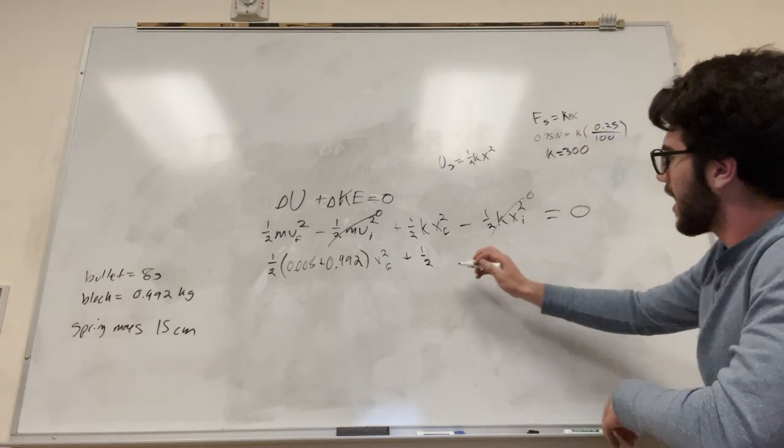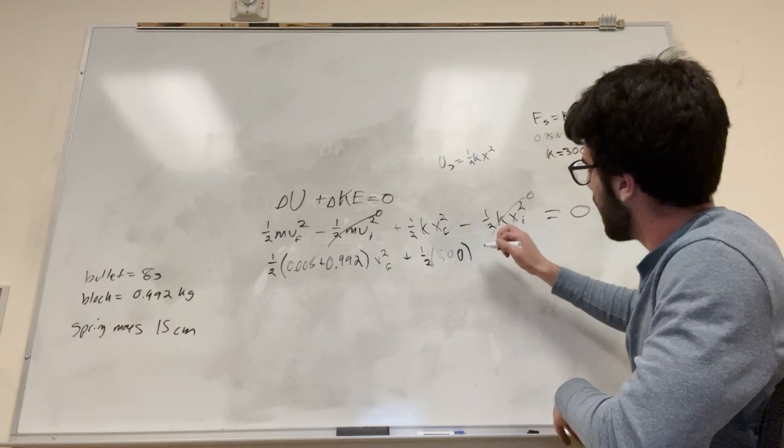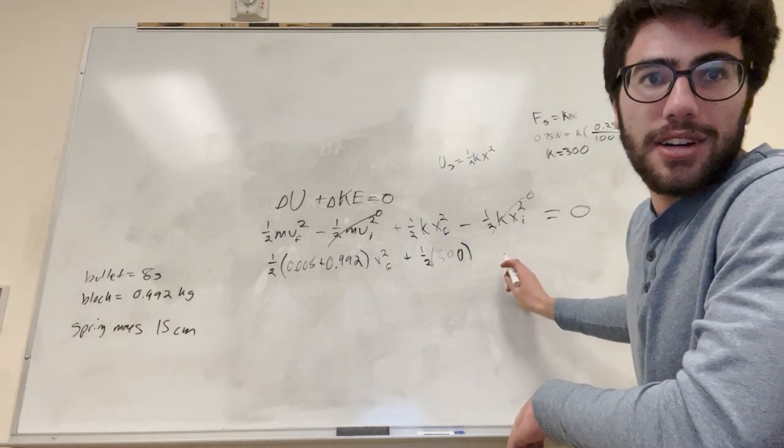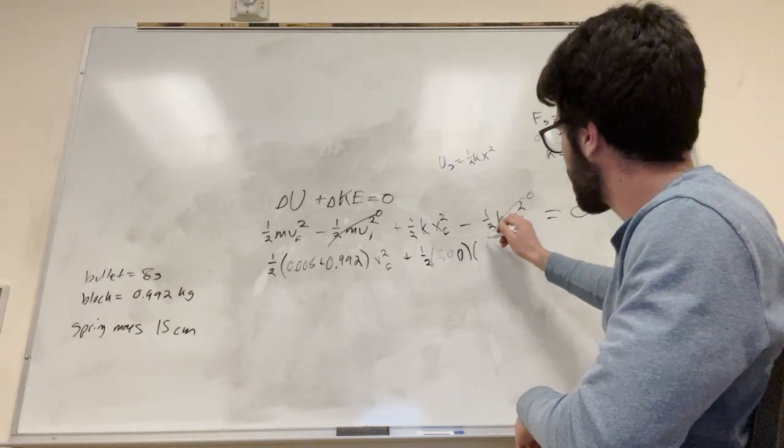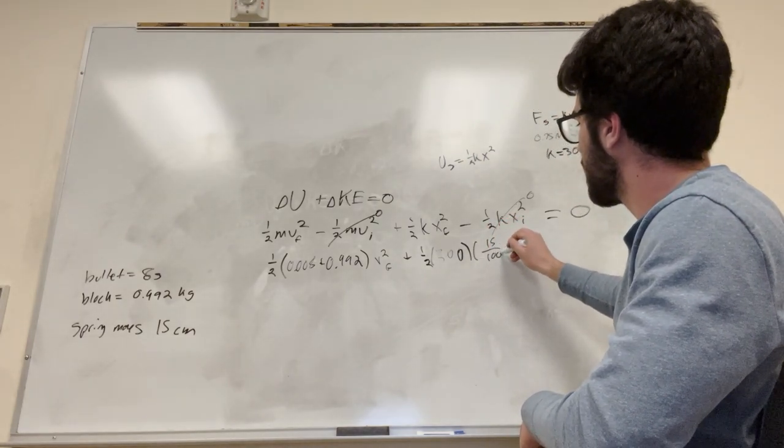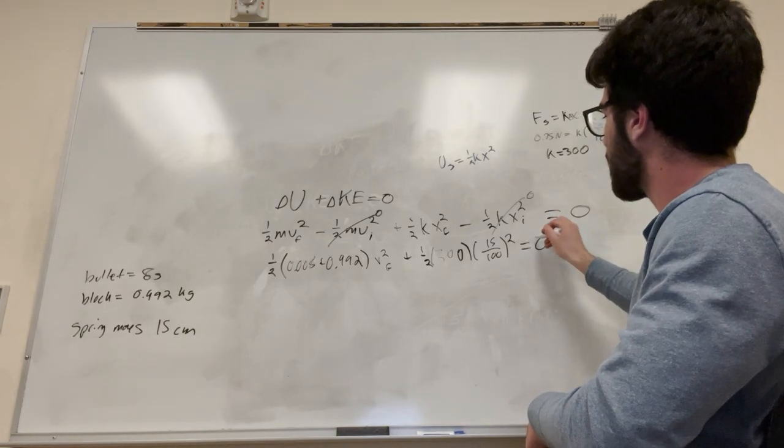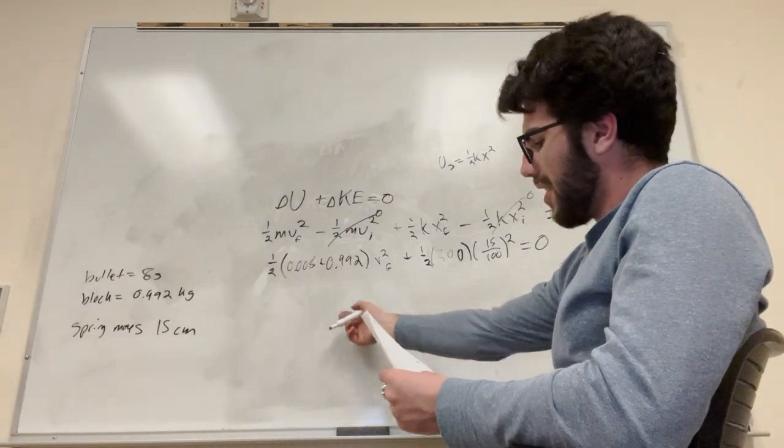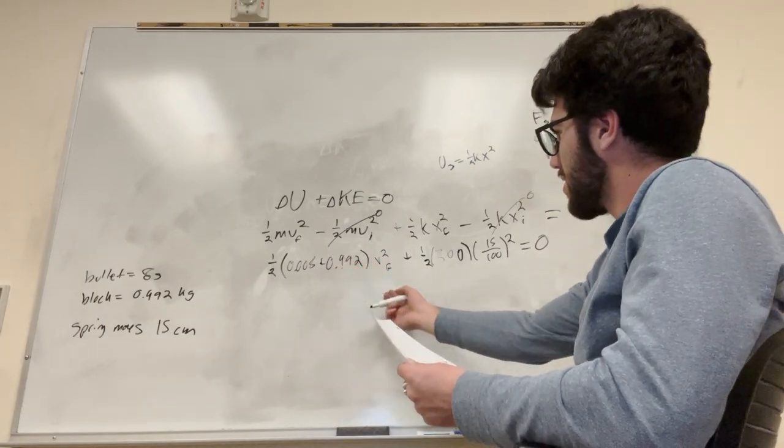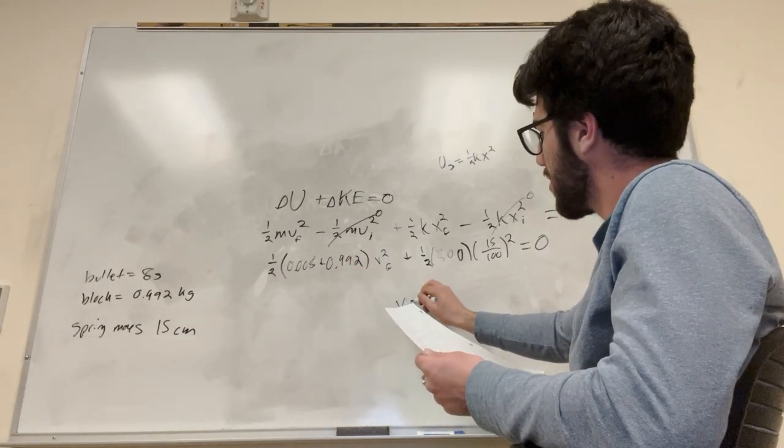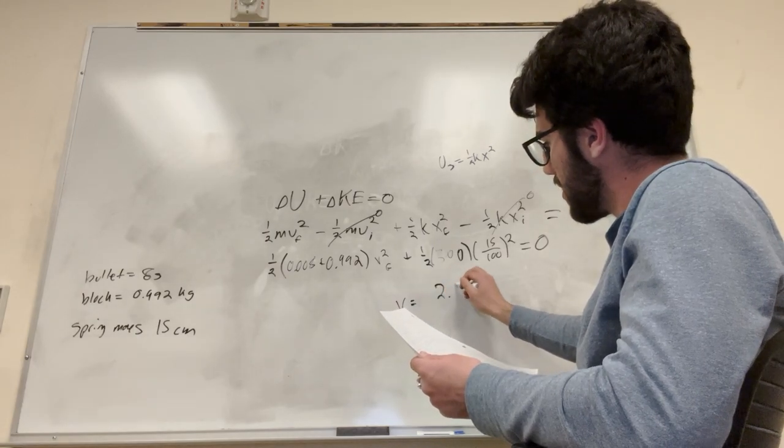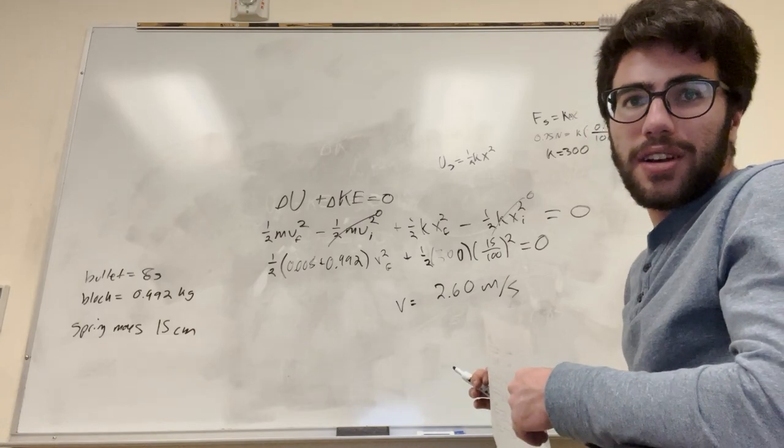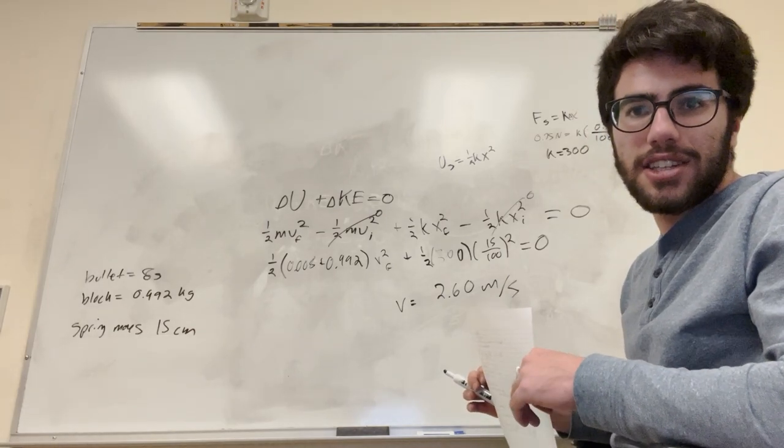And then the change in x squared which is 15 centimeters this time. So this is 15 but over 100 squared. And then this is all equal to 0. So if you move this over to the other side, you multiply by 2, and then you do all this stuff and take the square root, you're getting velocity is equal to 2.60 meters a second. Okay so that's part one. That's the velocity just after impact.